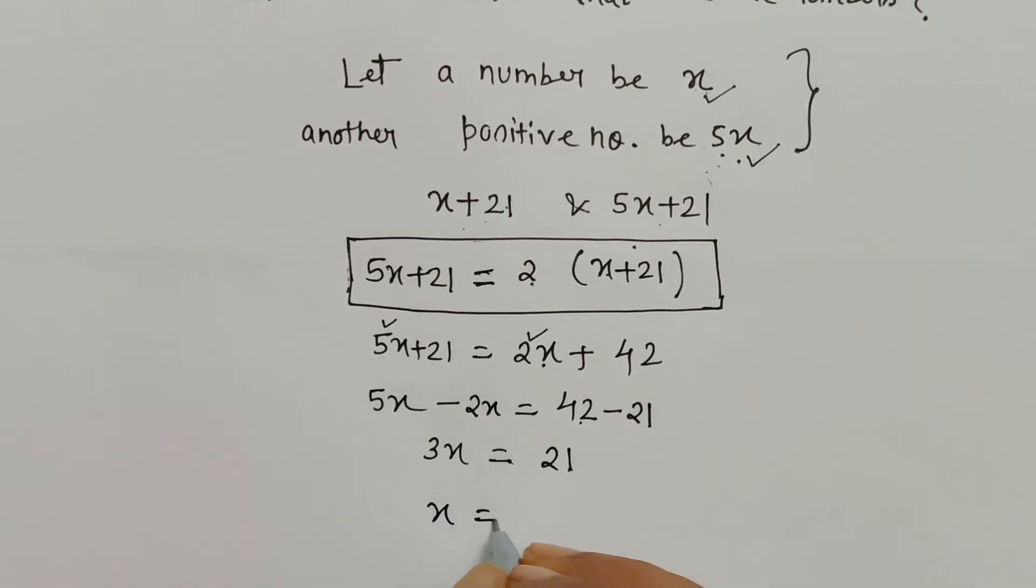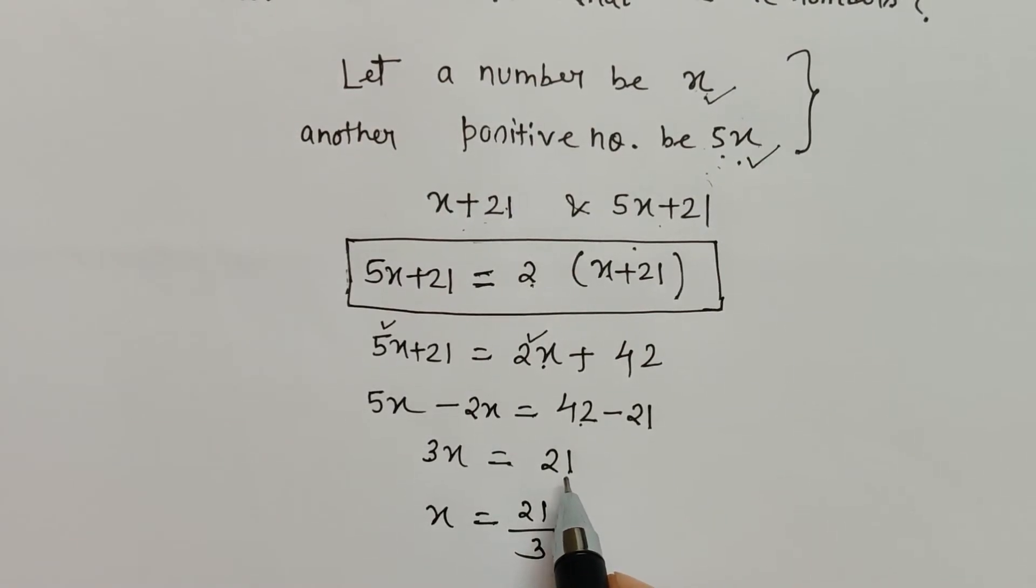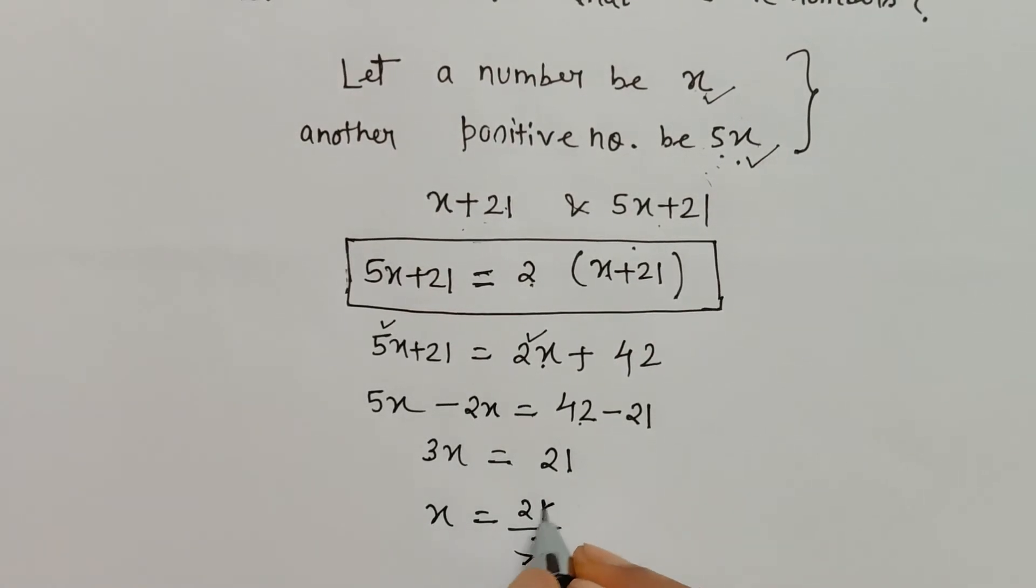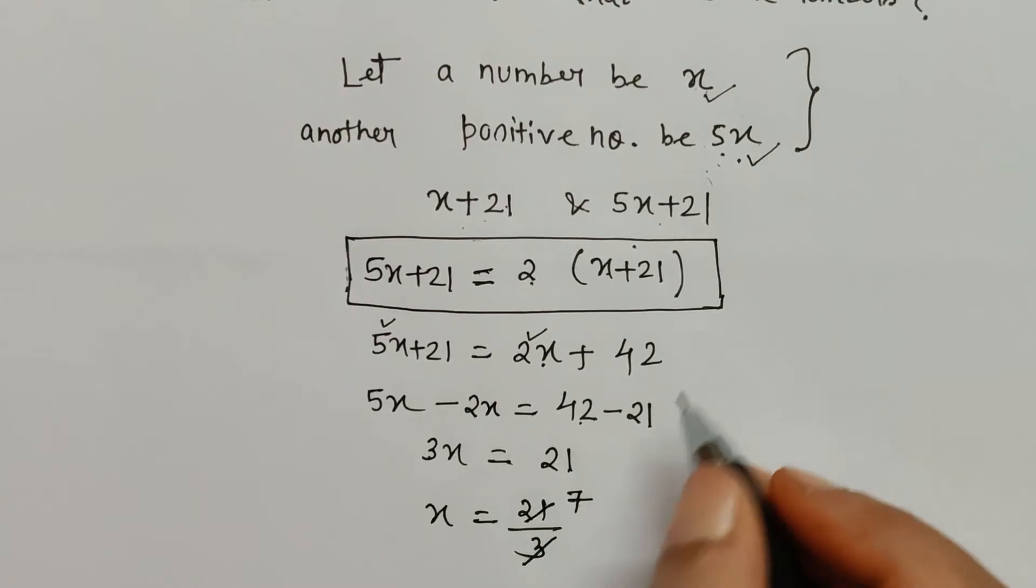Then x = 21 upon 3. 3 is getting multiplied here, when shifted to right hand side it will divide the value on the right hand side. So 3 ones are 3, 3 sevens are 21. So the value of x we got is 7.